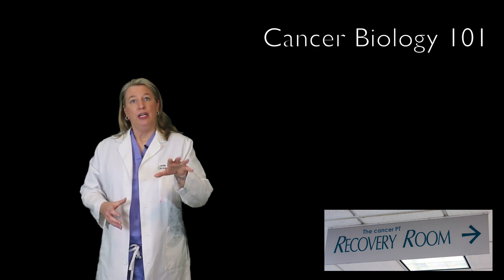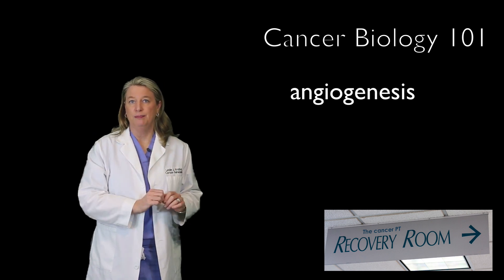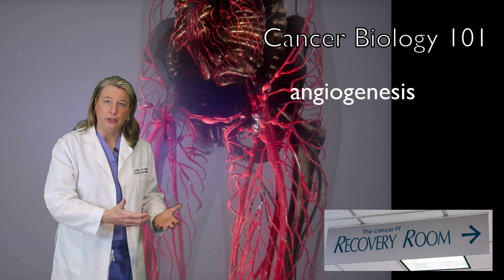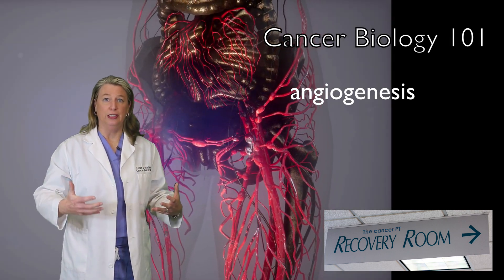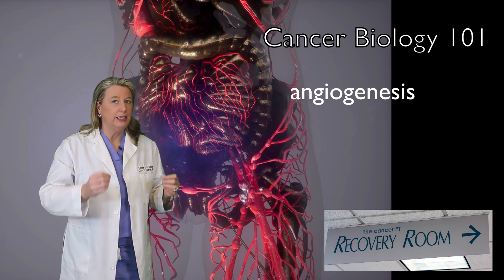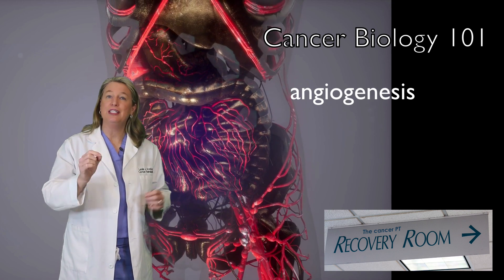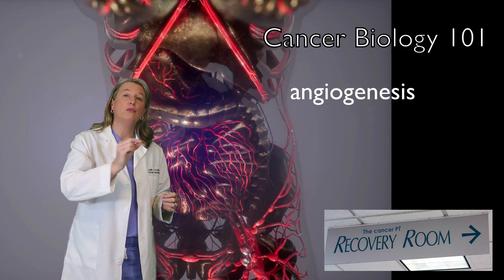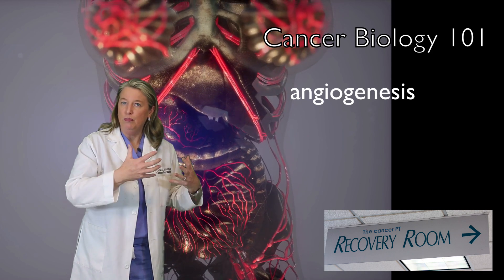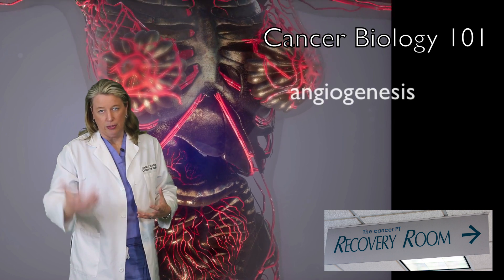Now onto our third characteristic of cancer cells: angiogenesis. Angiogenesis is the name for new blood vessel formation. Normal angiogenesis in the tissues of our bodies is usually a tightly regulated process. But tricky cancer cells often learn how to release their own chemicals to override the normal controls, resulting in their ability to create their own blood supply to support their uncontrolled, rapid growth.